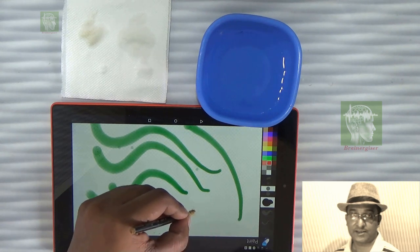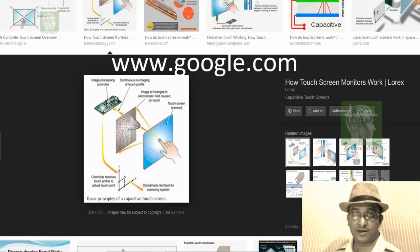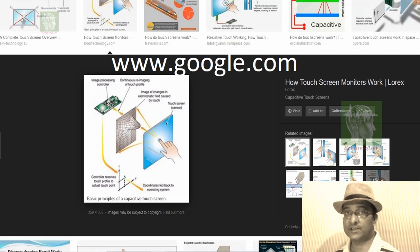Because of that circuit which is created between the body and the mobile screen, charge flow will be there. There are lot of explanations about how touch screens work in the Google, please search for that.